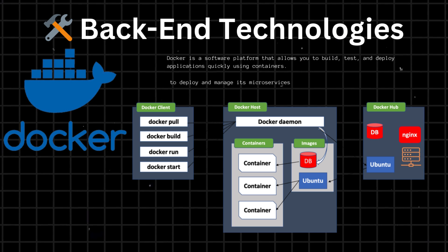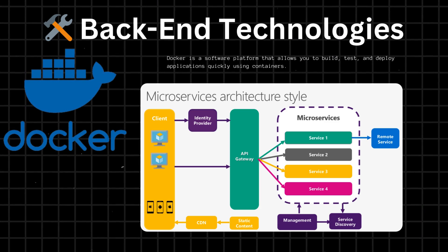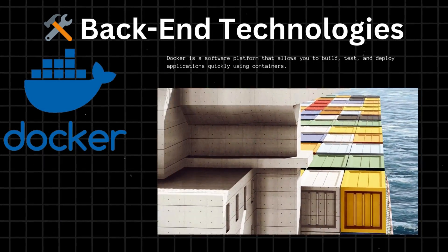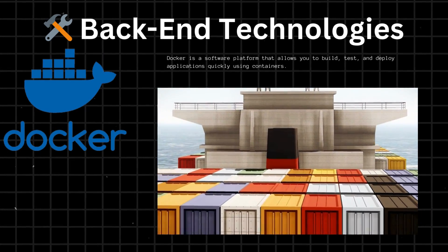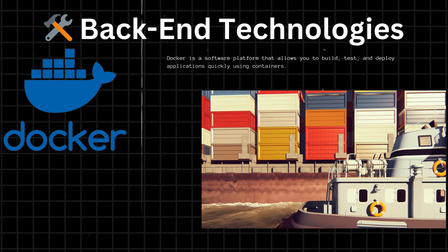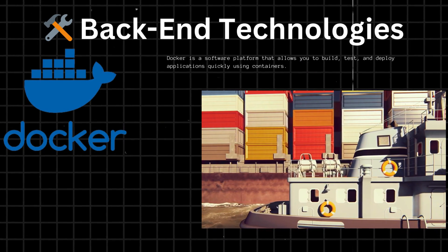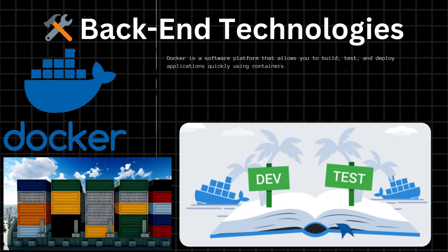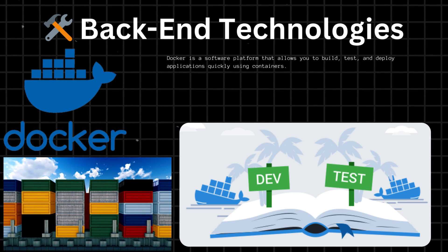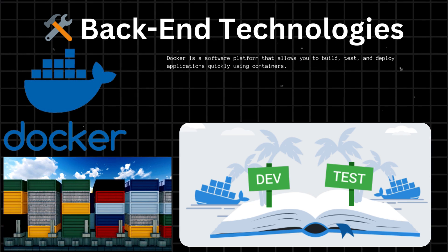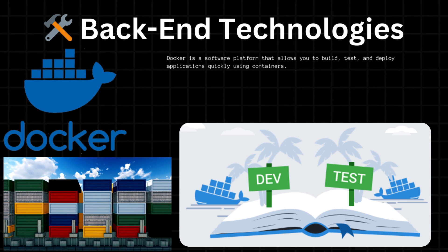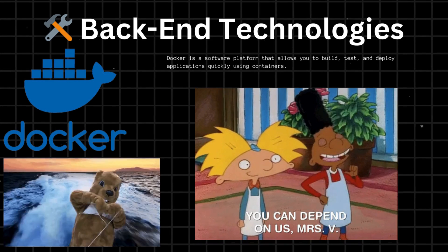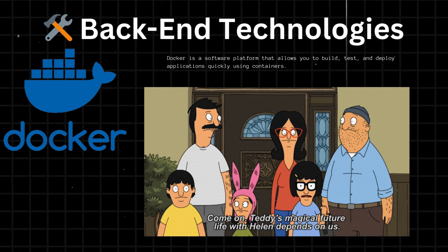Docker. Spotify uses Docker to deploy and manage its microservices, which are the building blocks of its back-end architecture. Docker allows Spotify to package each microservice into a separate container, which can be deployed and managed independently. This provides greater flexibility and scalability, as new microservices can be added or removed without affecting the rest of the system. Docker also allows Spotify to quickly test and deploy new versions of its microservices and provides a consistent environment, making it easier to manage dependencies and avoid compatibility issues.